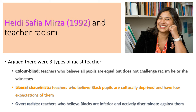Finally, overt racists - or old-school racists - these are teachers who believe black pupils are inferior, and possibly Asian and other minority ethnic pupils too, and actively discriminate against them. They may not necessarily use racial epithets, but their behavior towards these pupils is often aggressive and rude, and they undermine those pupils' efforts to achieve.